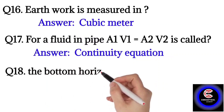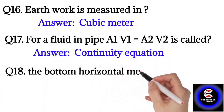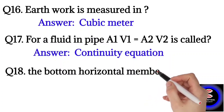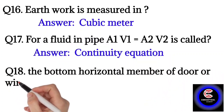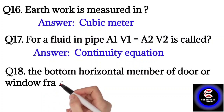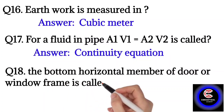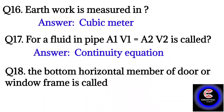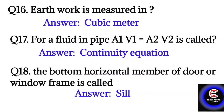Question number eighteen: the bottom horizontal member of a door or window frame is called a sill. So the answer is sill.